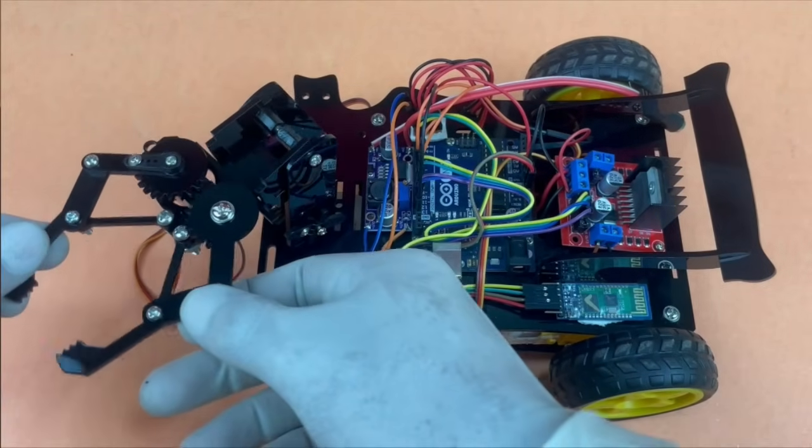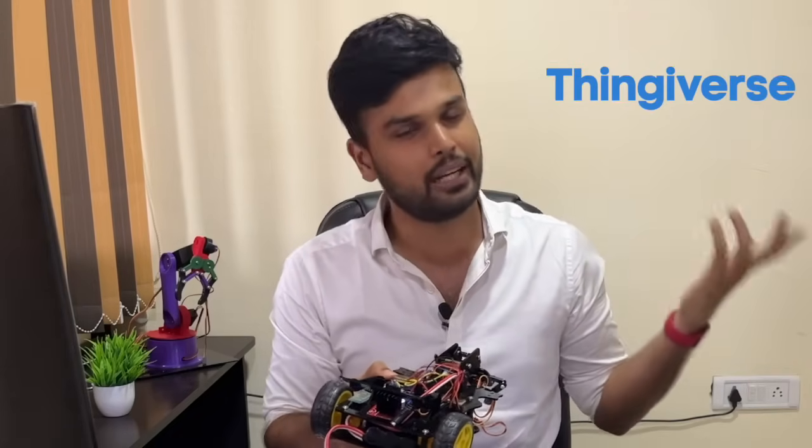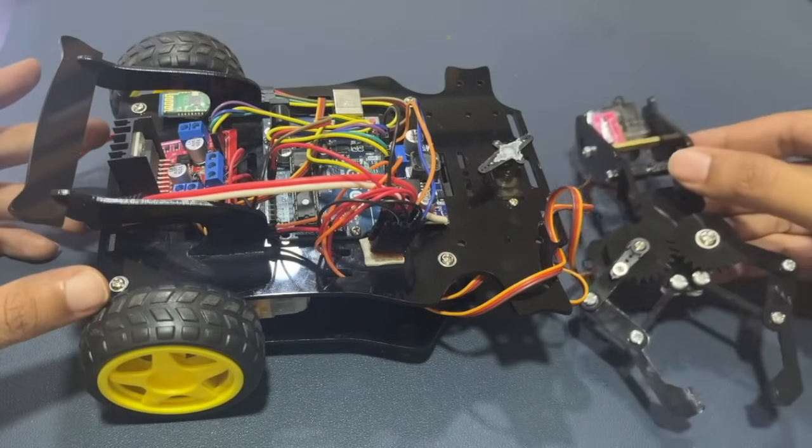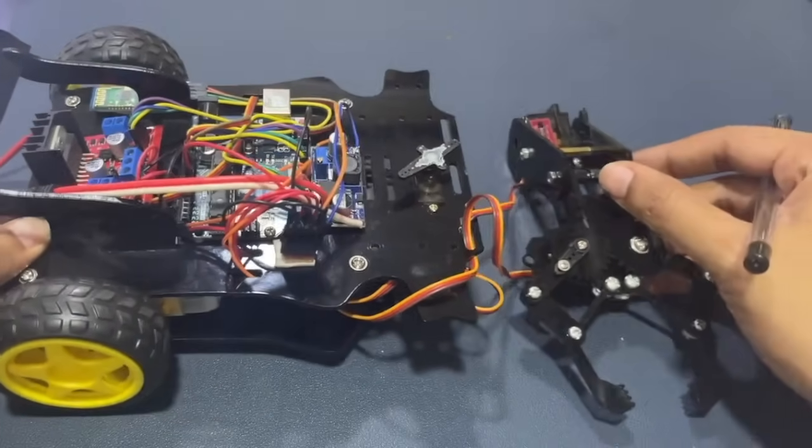So that being said, like always we have our complete design for the gripper as well as the robot on our Thingiverse page. You can directly download it from there. Now let's take a look at the hardware components used in this project. To make things more easy to understand we have separated the gripper part from the actual robot.